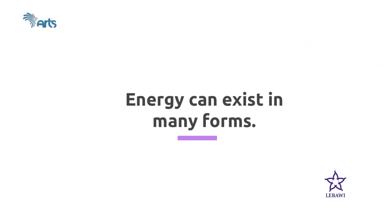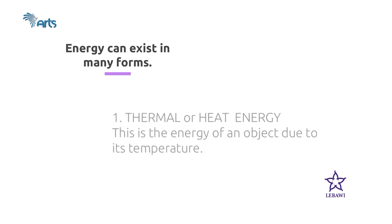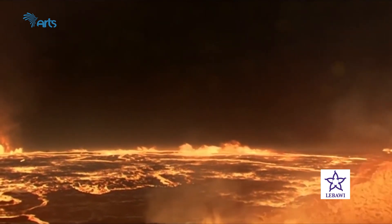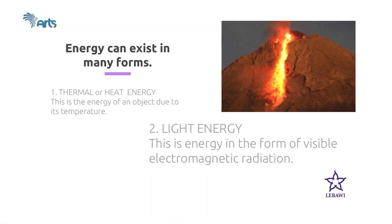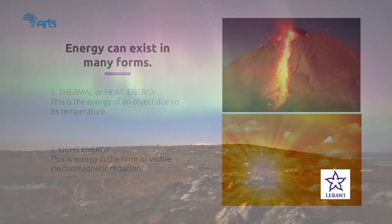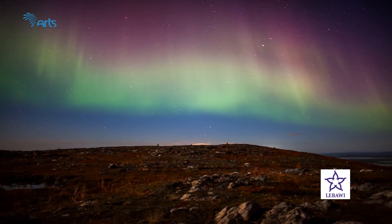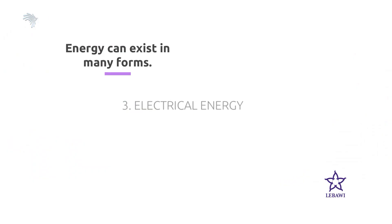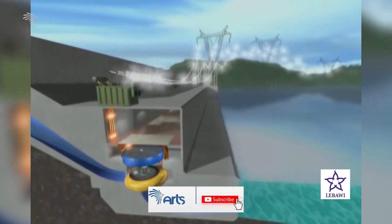Let us see some types of energies. The first one is called thermal or heat energy. Heat energy is defined as energy which flows from a hotter object to a colder one until these two objects maintain equal temperature. And the other is light energy. Light energy is one form of electromagnetic radiation, and it is gained from this radiation. We can change light energy into other forms. The third one is electrical energy.